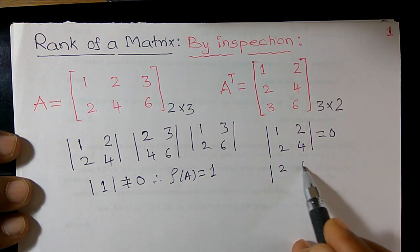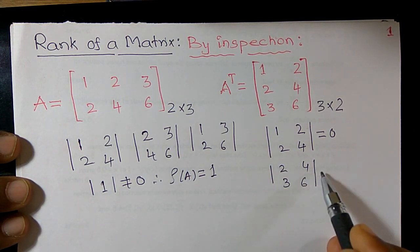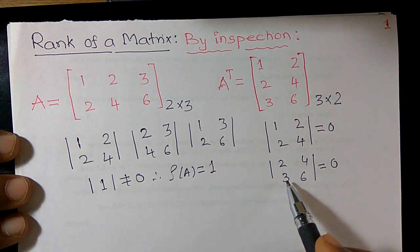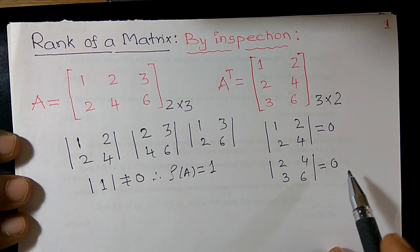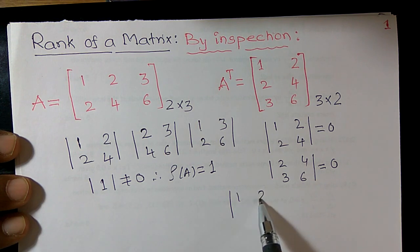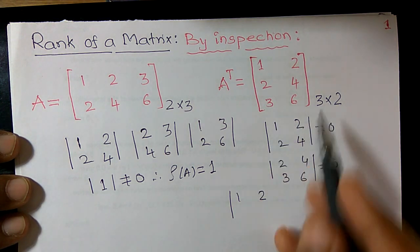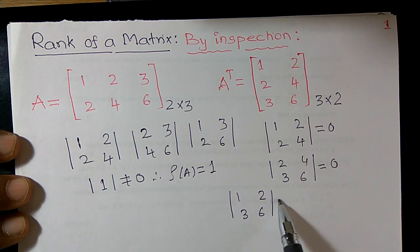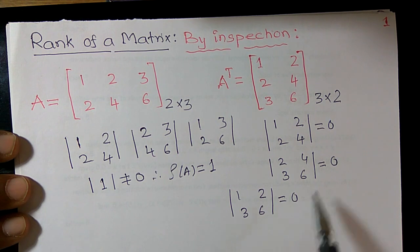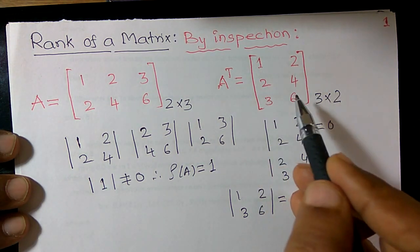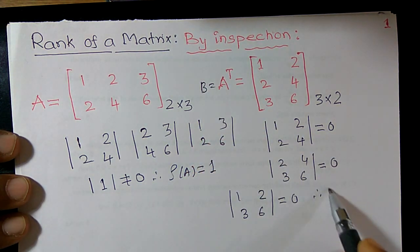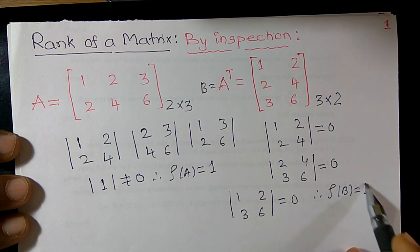Another minor: 2, 4, 3, 6 is also 0 — 2×6 = 12, 3×4 = 12, so 12 minus 12 = 0. One more minor: 1, 2, 3, 6 — 1×6 = 6, 3×2 = 6, so 6 minus 6 = 0. It means all possible minors of order 2 are equal to 0. Therefore, rank of B is equal to 1.